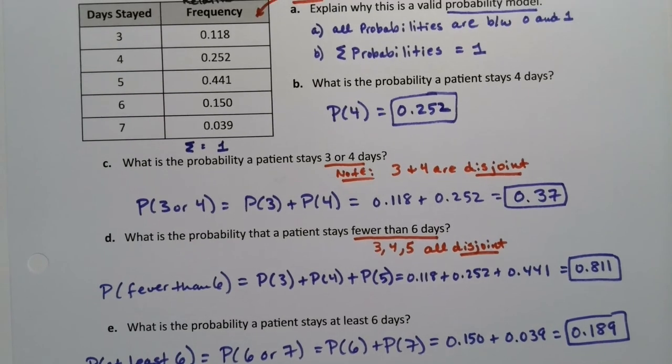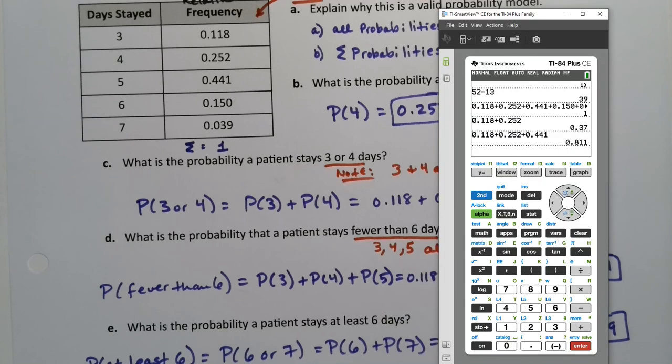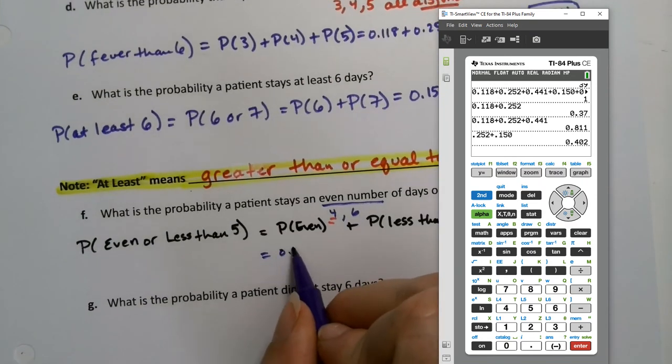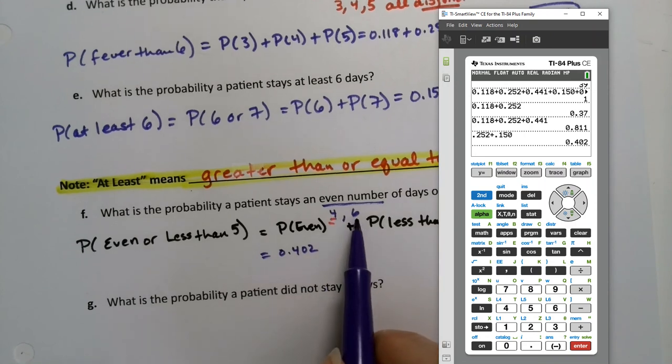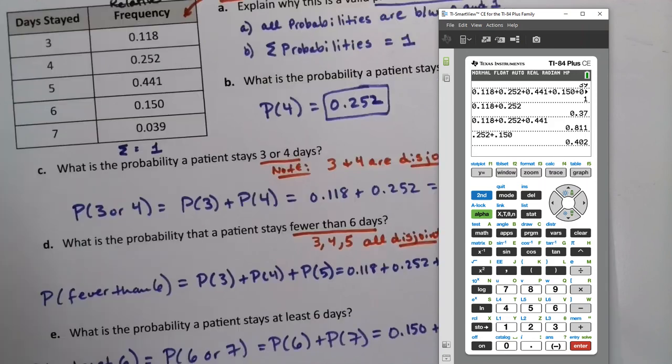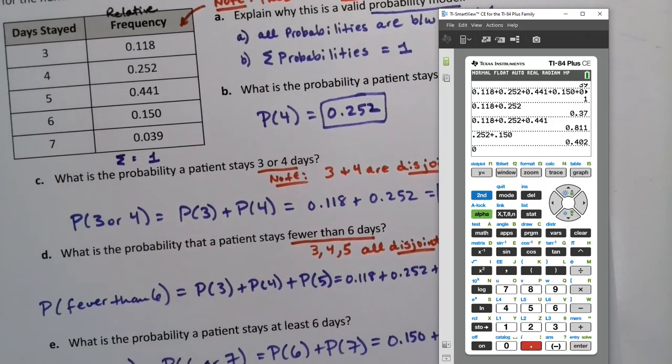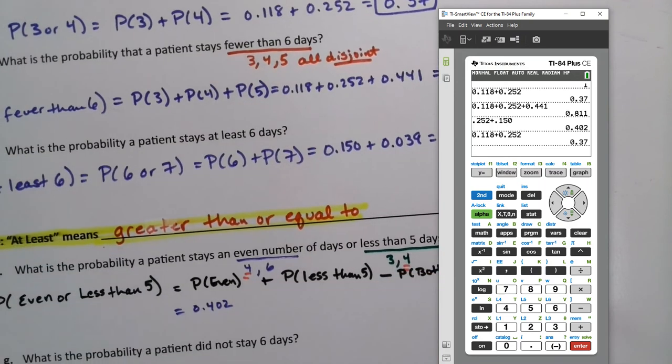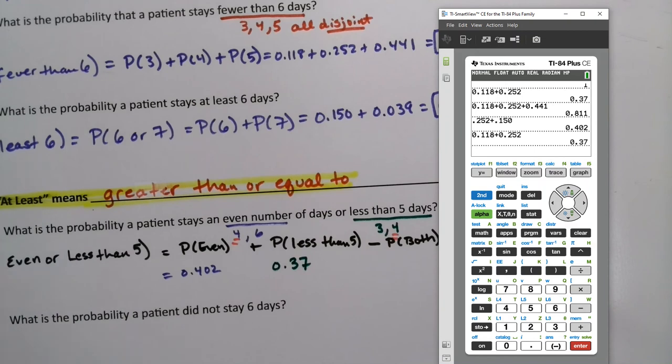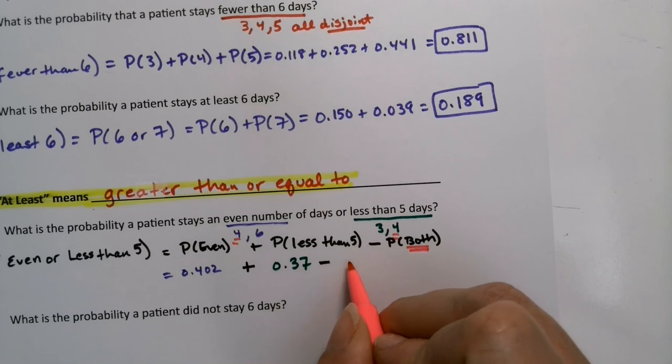Even will be 4 and 6 together, so 4 and 6 together makes 0.252 plus 0.150, which makes 0.402. Less than 5 would be 3 and 4, so 0.118 plus 0.252, that's 0.37. We already found that one. So add to it 0.37. But now we have to take away the overlap because it's not fair. We've counted 4 twice. So that 0.252 was part of this 0.402 and it was part of the 0.37. So we have to take away that overlap, take away the probability of 4, which is 0.252.